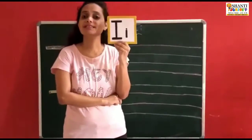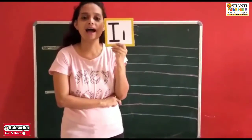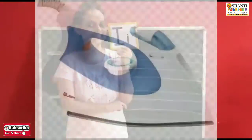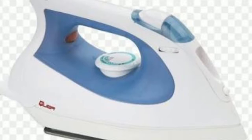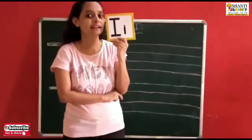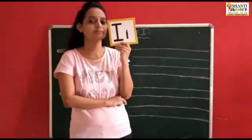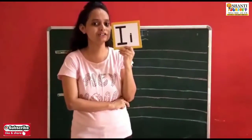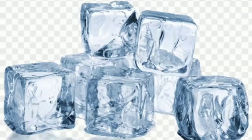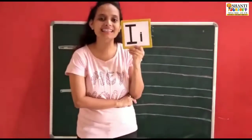And children, what starts with letter I? Come on, think — do you know? I will tell you. I for iron — yes, mama does the pressing with iron. I for igloo — yes, it is a house made up of ice. I for eyes also. I for ice cream — yes, you all love to eat ice cream.